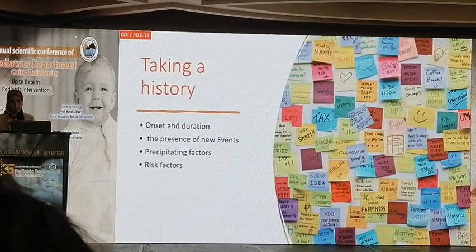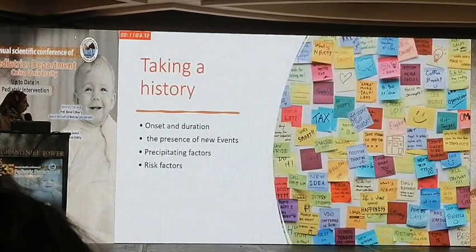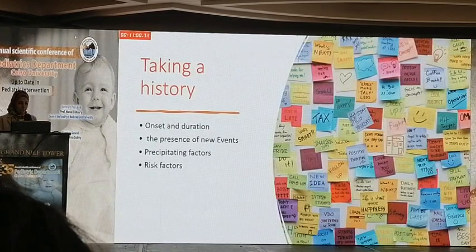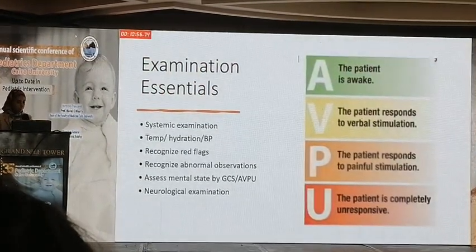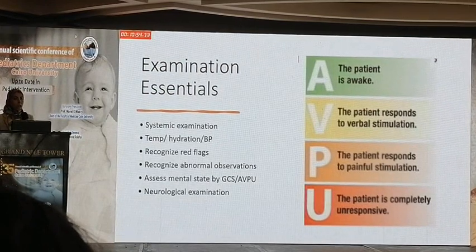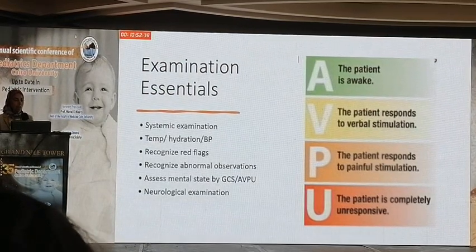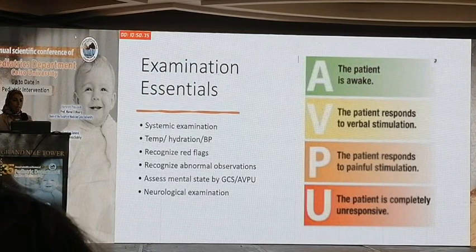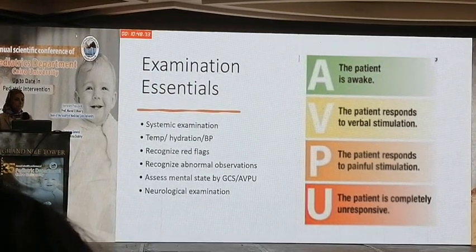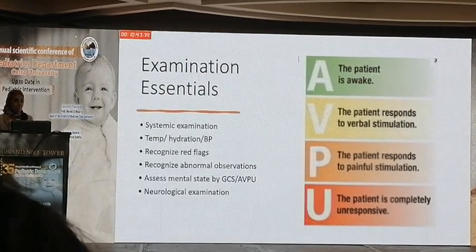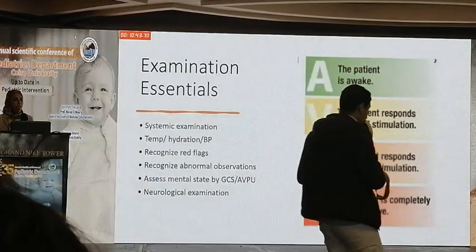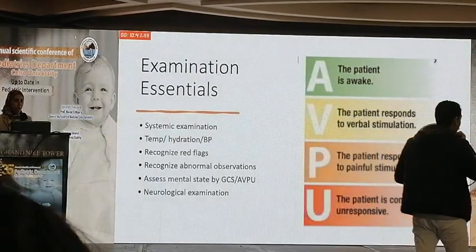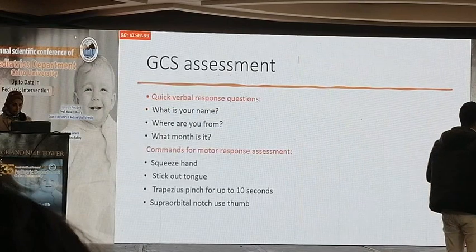We have to take history about the onset and duration, the presence of new events, preceding factors and risk factors, and perform a thorough examination including systemic examination, assessment of temperature, hydration, blood pressure, recognize red flags and abnormal movements. Assess the mental status by the Glasgow Coma Score or the more simplified AVPU score, and perform a neurological examination.